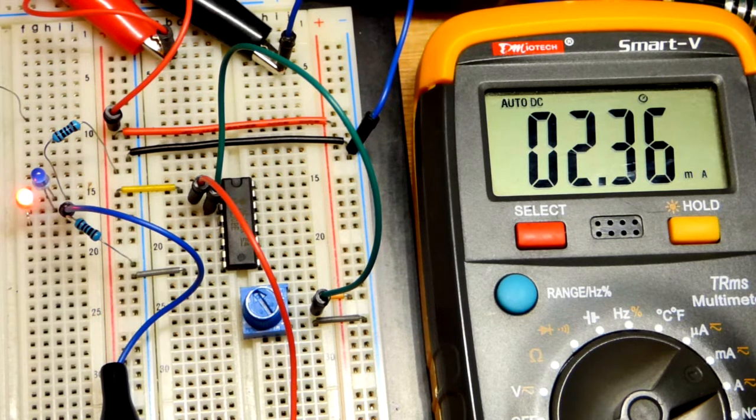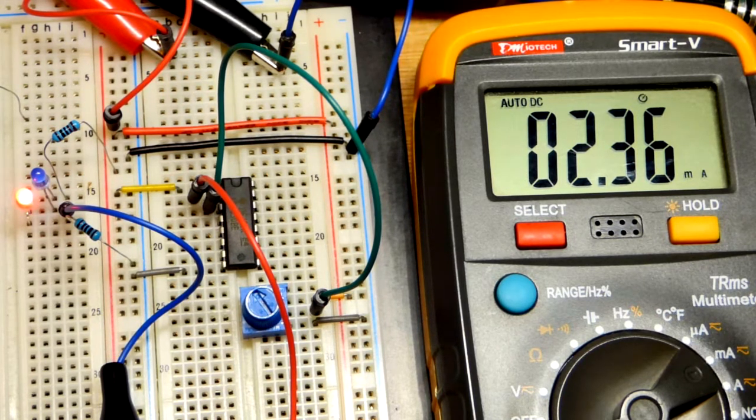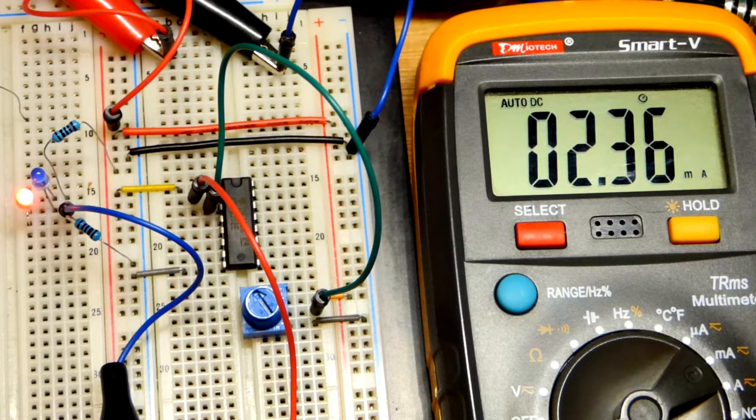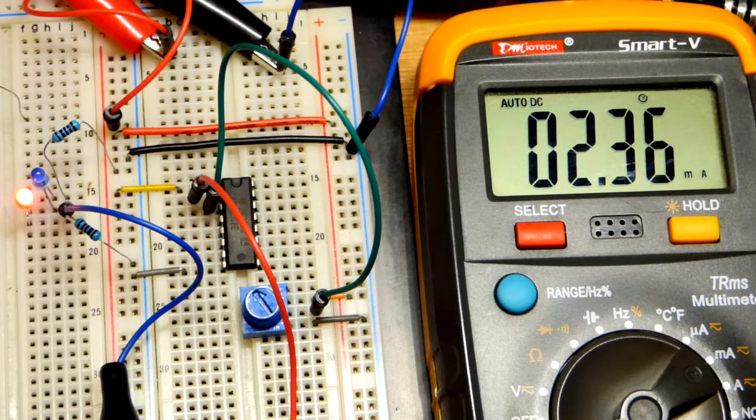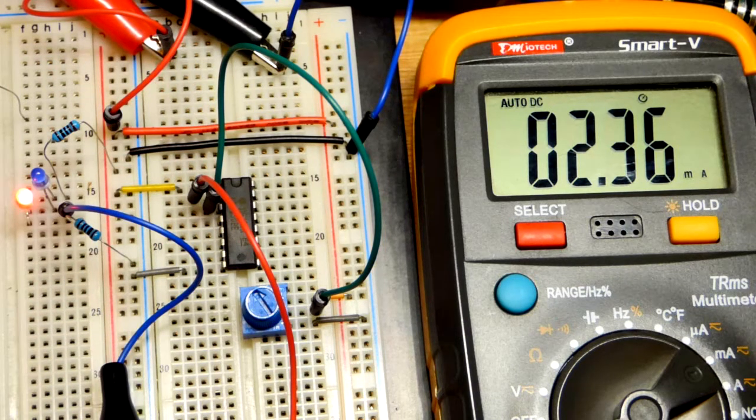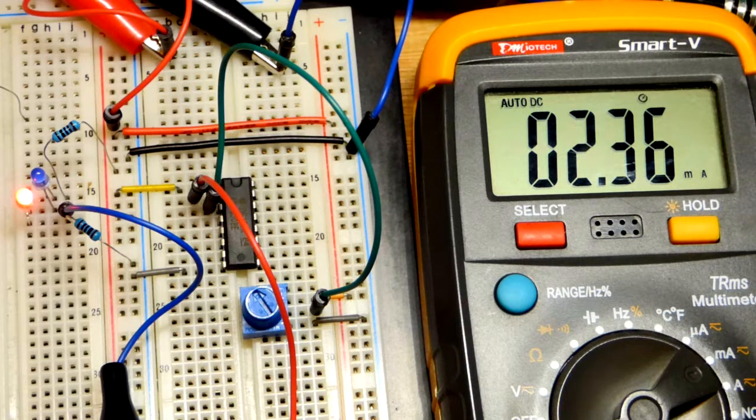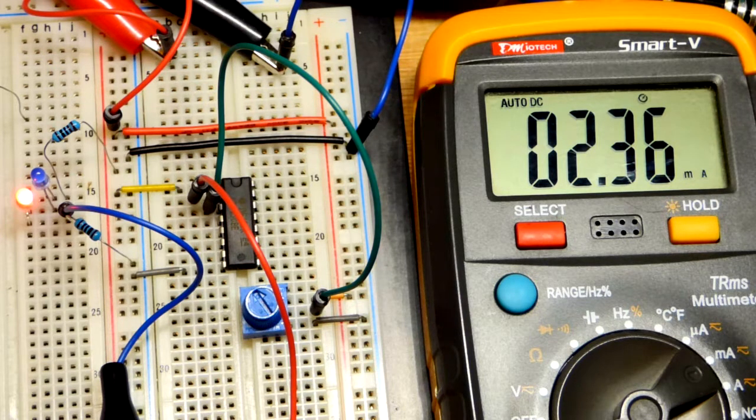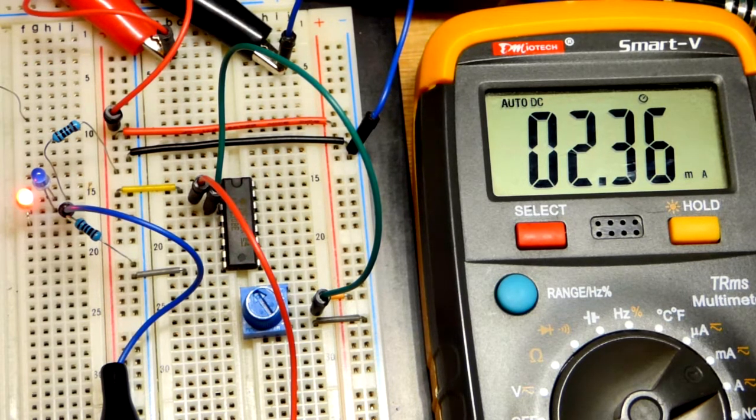More positive flowing towards more negative there. Hopefully that made sense. If you found sourcing and sinking confusing, all it is is saying whether the output is the more positive or the more negative part of the load. Whether it is outputting or whether as an output it is actually taking in current. Hope that all made sense. Thanks for watching.